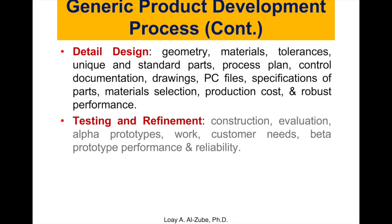The following stage is testing and refinement. We're going to build either a prototype or produce drawings and infographics, and we need to go back to the users. We will do construction, evaluate the design, and have different people involved in the evaluation process. We should be able to build our prototype at this stage — giving it to people to try and getting their feedback. There is also a beta prototype stage focused on performance and reliability, but we're not going to do that in this class; we're going to focus more on the alpha prototype.